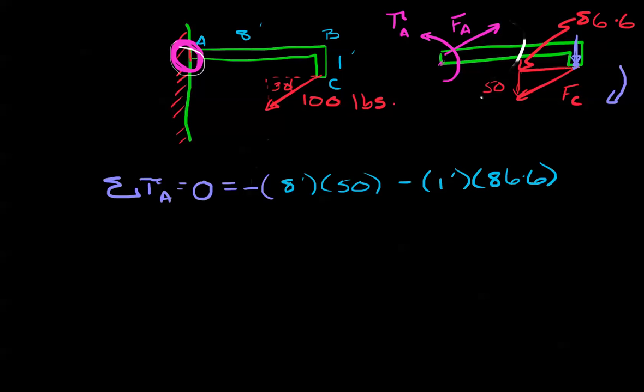Eight feet times 50 pounds. And then we're going to subtract at one foot, 86.6. But that's not everything. This is applying a torque, this one and this one. In addition, A is applying a torque. So that's going to, and A is applying a torque in the positive direction. Plus, let's make that pink. Plus torque in the A direction. Let's get torque A by itself. And we're going to add these. So that's going to be 486.6 foot pounds.